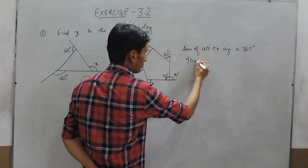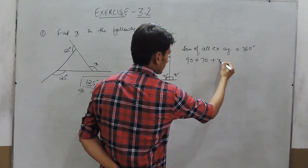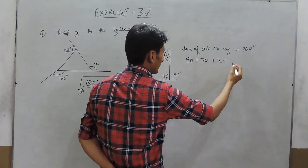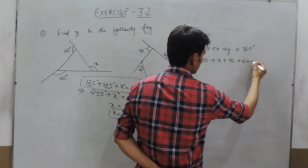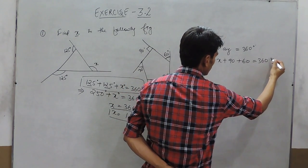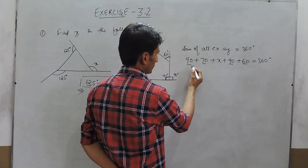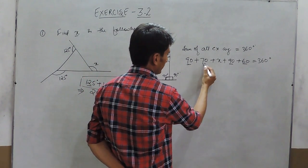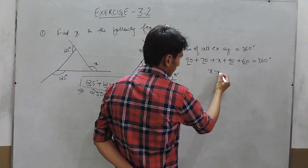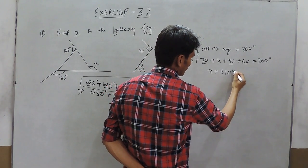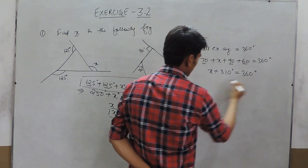The sum of all these exterior angles is equal to 360 degrees. Solving this equation by adding the known values gives 310 degrees plus x equals 360 degrees.